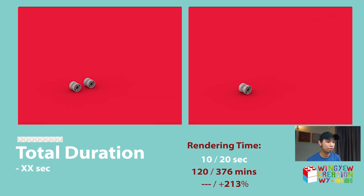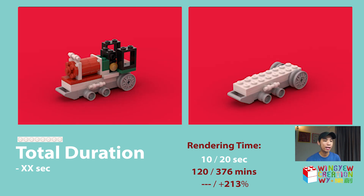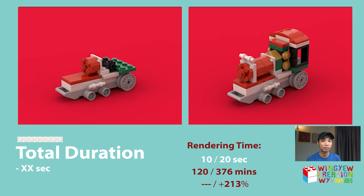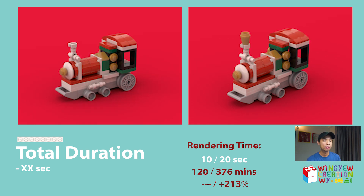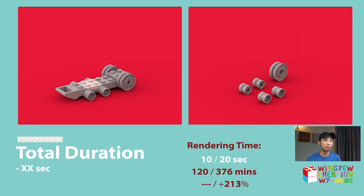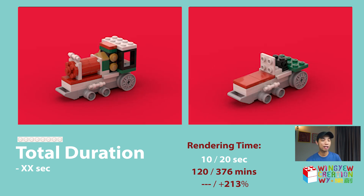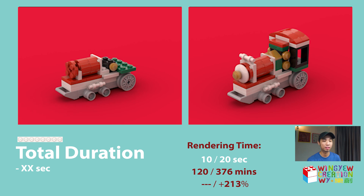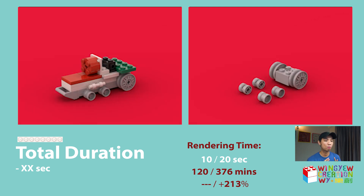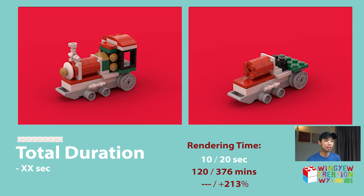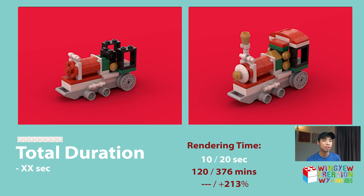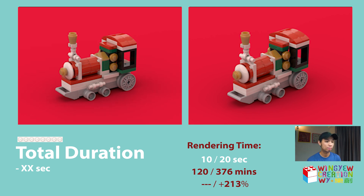Regarding rendering time, doubling the duration roughly doubles the render time. With a 10-second animation it took about 120 minutes to render, but doubling to 20 seconds took about 370 minutes to render — close to a 2x increase. How you play around with these settings is up to you, as everyone has their own preference including the 80/20 ratio I mentioned. This is very dependent on what you want.